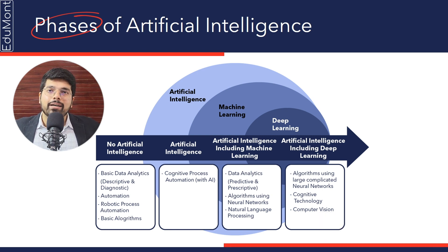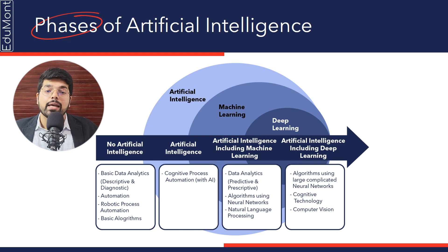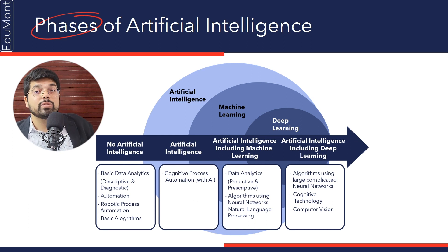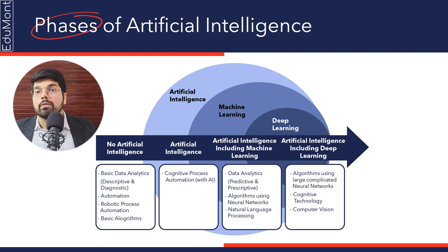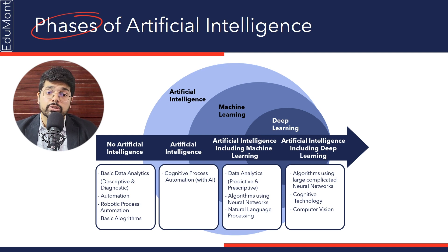One phase is where there is no AI present — everything is based on a basic level. Every job, whether data analytics, automation, or robotic work, is at a minimum level where human intelligence is not expected from the machine. That's the no-artificial-intelligence situation — basic algorithms and all.